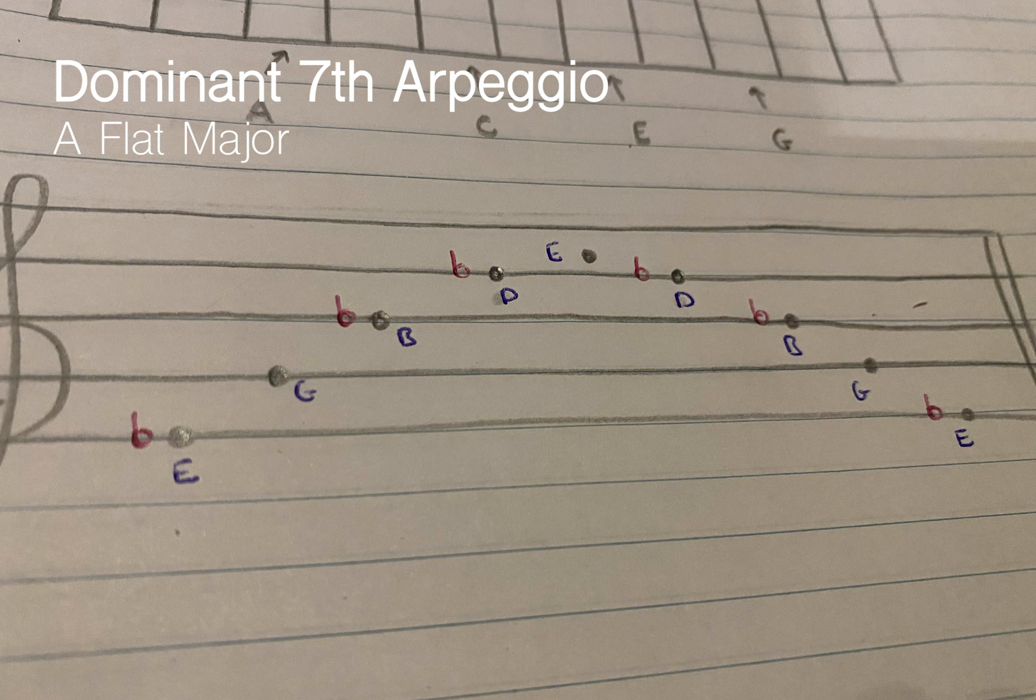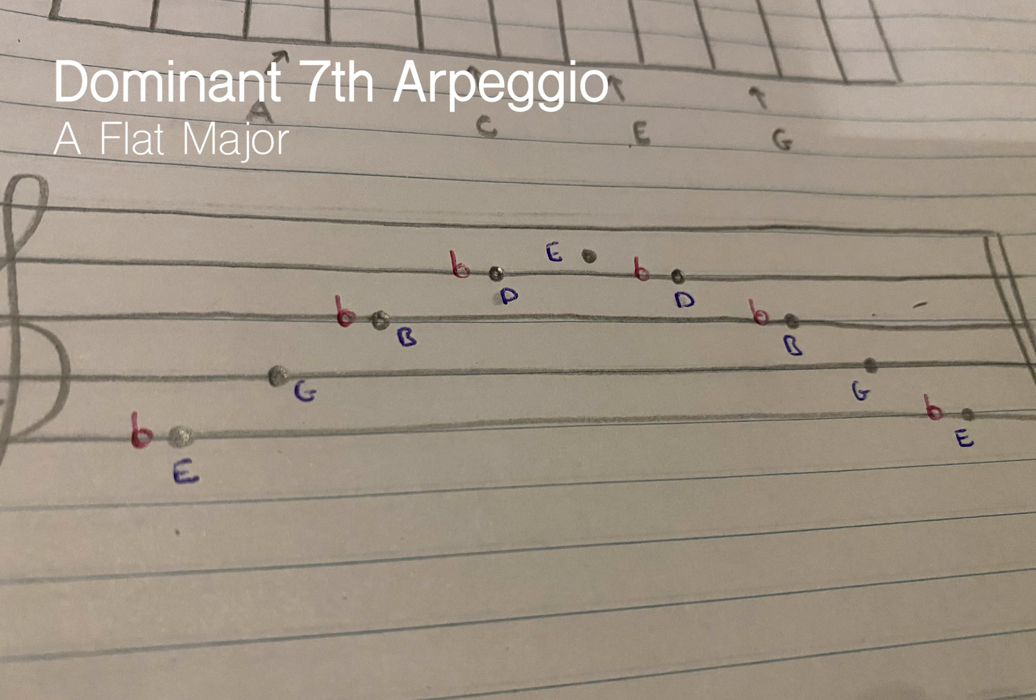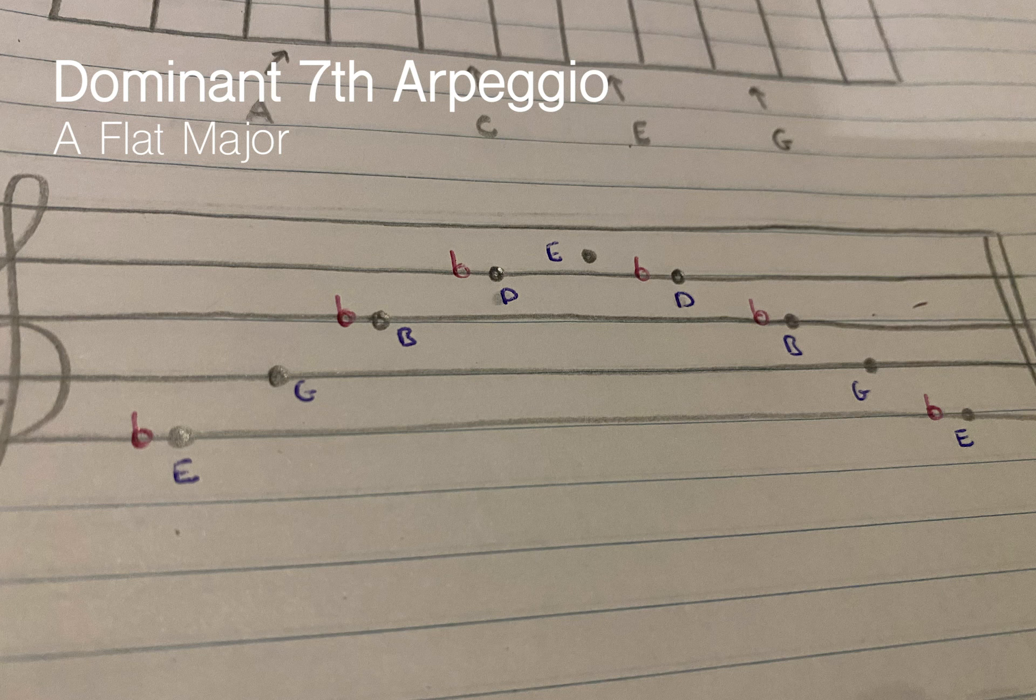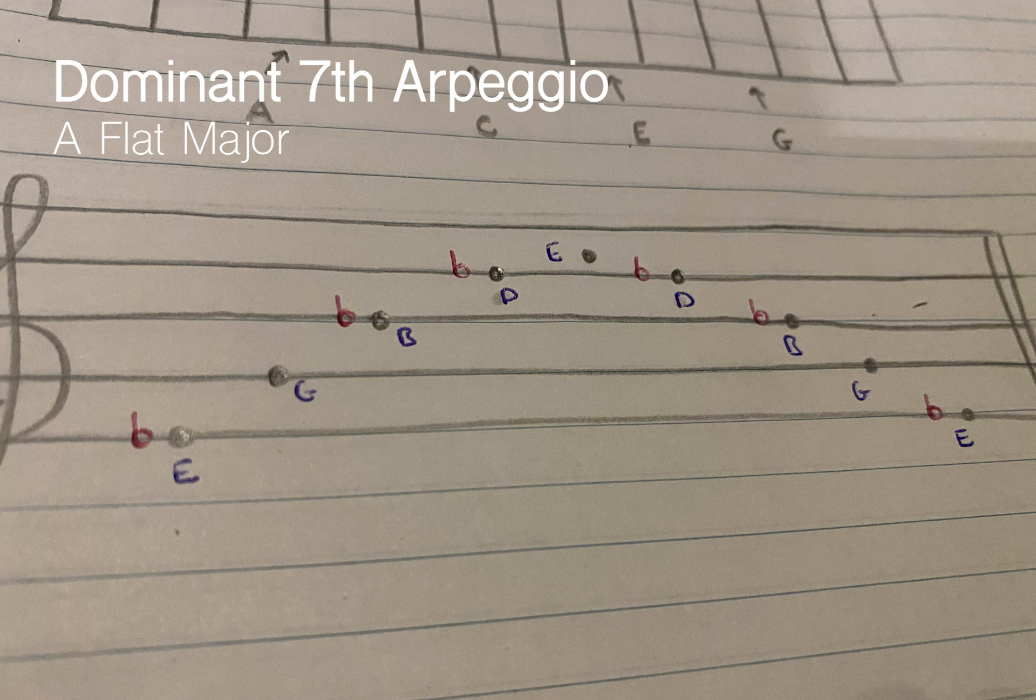So just a reminder that with this arpeggio, we're only dealing with one octave. However, if you do wish to shift into the second octave, what you really need to do is once your fourth finger lands on E flat, you shift the entirety of the thumb to G, and just continue from there with the same fingering: second finger on B flat, third finger on D flat, so on and so forth.